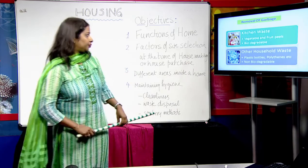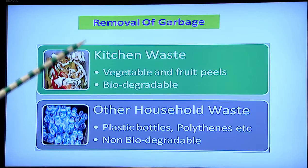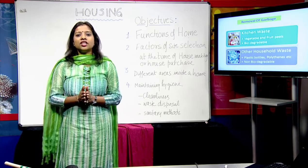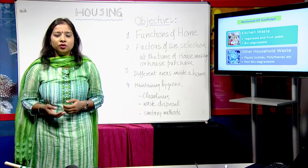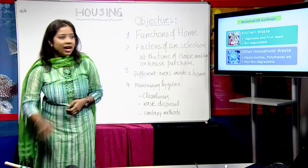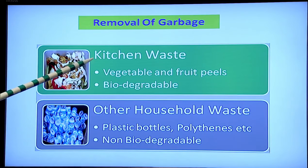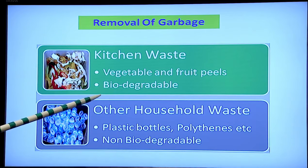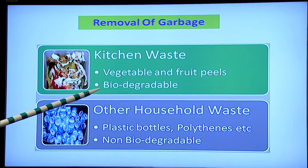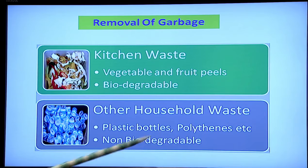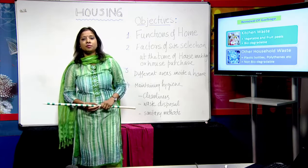For removal of garbage: household garbage consists of two types — kitchen waste and other household waste. Kitchen waste is mainly organic in nature and can be easily decomposed. Kitchen waste — comprising vegetable and fruit peels — is biodegradable and can be converted into organic manure, so it should be separately disposed of. Other household waste such as plastic bottles and polythene is non-biodegradable and should also be separately disposed of.